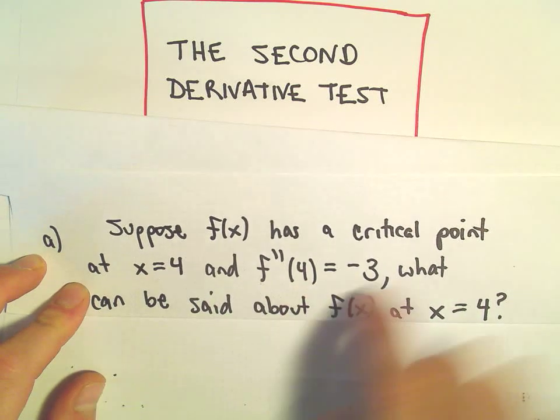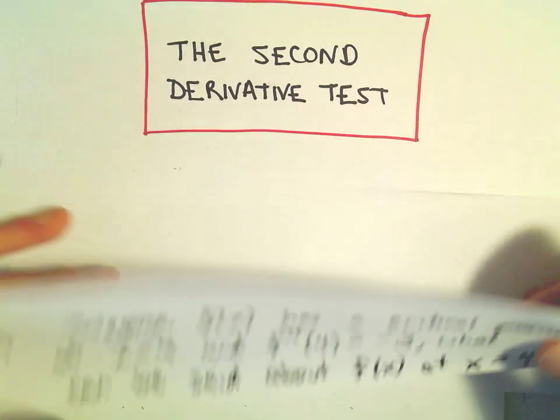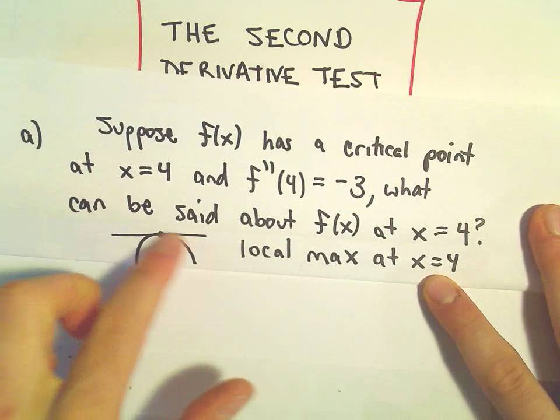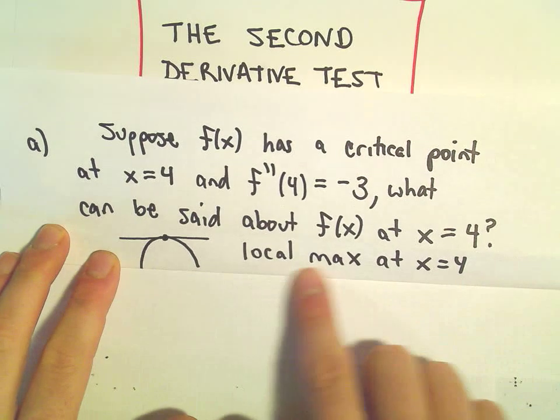Well, recall if you have a critical point and the second derivative is negative, what we can say in that case is the idea is we're actually going to have a local maximum at x equals 4.